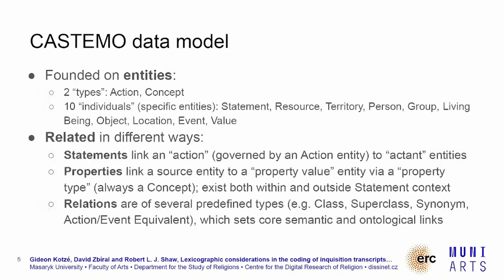The data model is founded on entities, where we have basically two types — action and concept — as well as individuals that are specific entities, such as a specific person, group, or value. Statements link an action entity to so-called actant entities, while properties link a source entity to a property value entity via a property type, which is always a concept. Relations are of several predefined types: class, superclass, synonym, and what we call action-event equivalent, which sets the core semantic and ontological links.